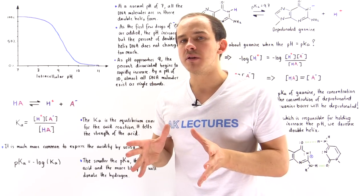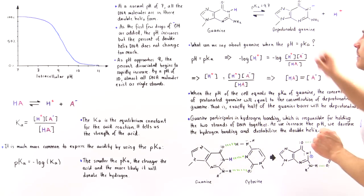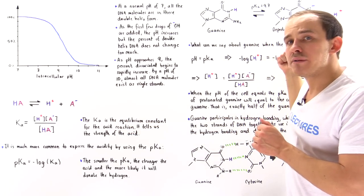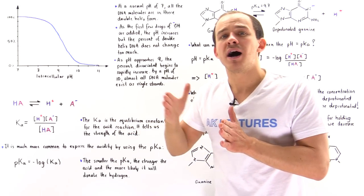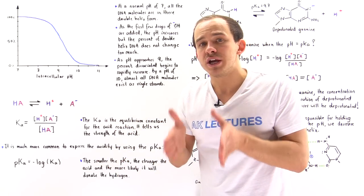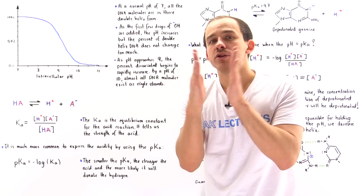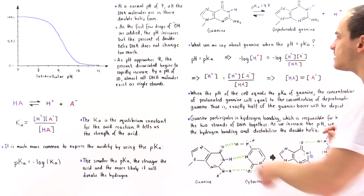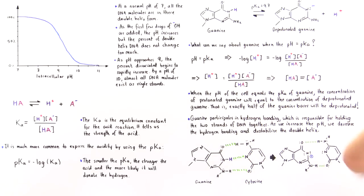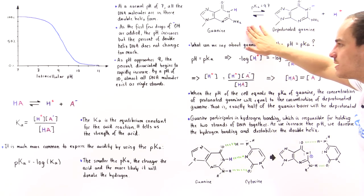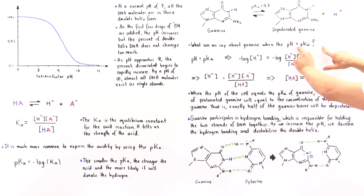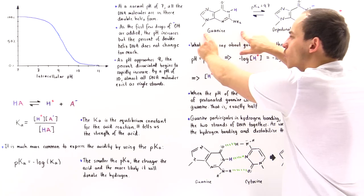Why is that a problem? That H atom actually associates with the other complementary base to form a hydrogen bond. The hydrogen bonds within our DNA hold the two strands of DNA together. Before we examine that in more detail, let's answer the following question: what can we say about guanine when the pH inside the nucleus of the cell is equal to the pKa of the guanine molecule?